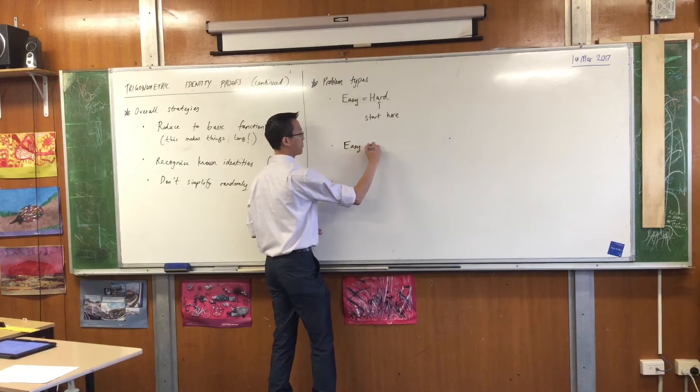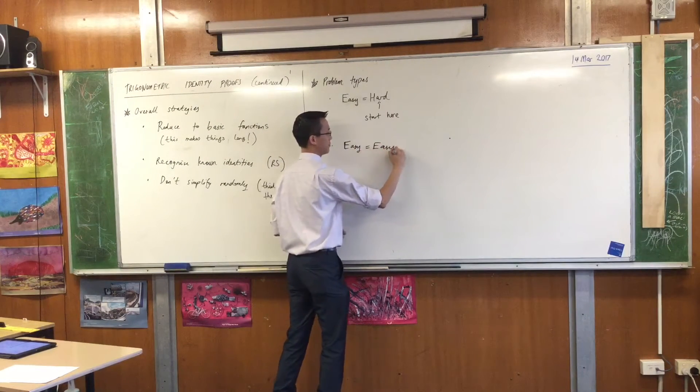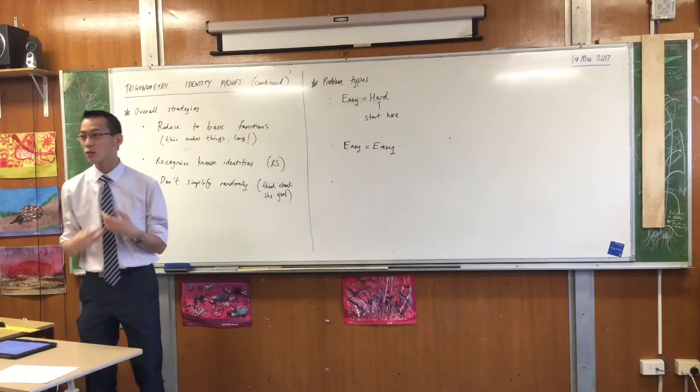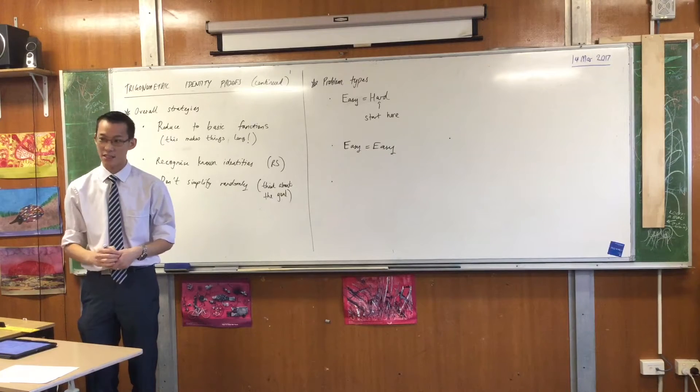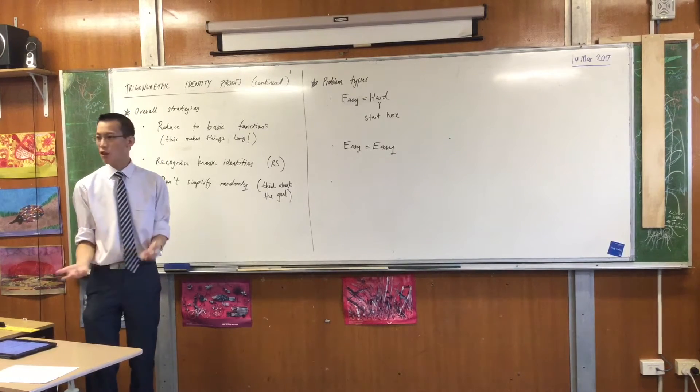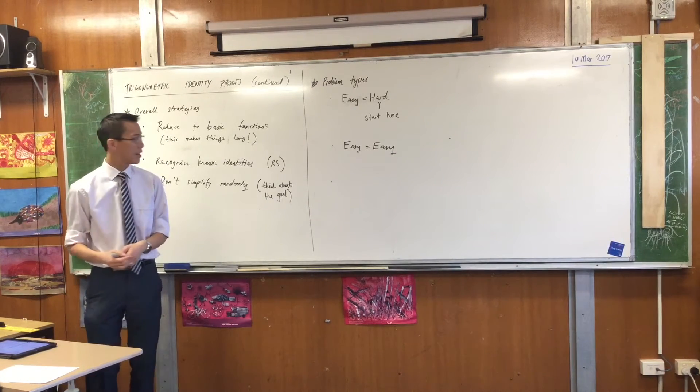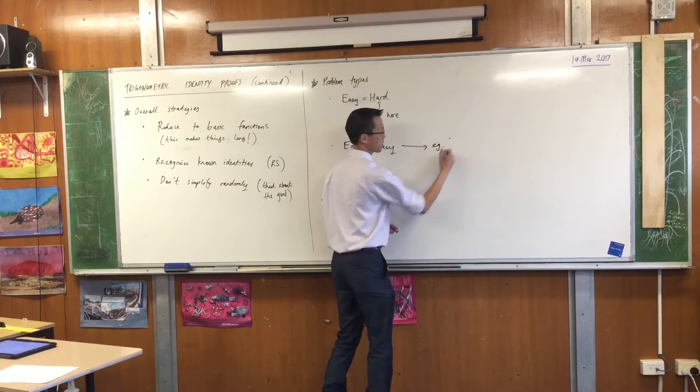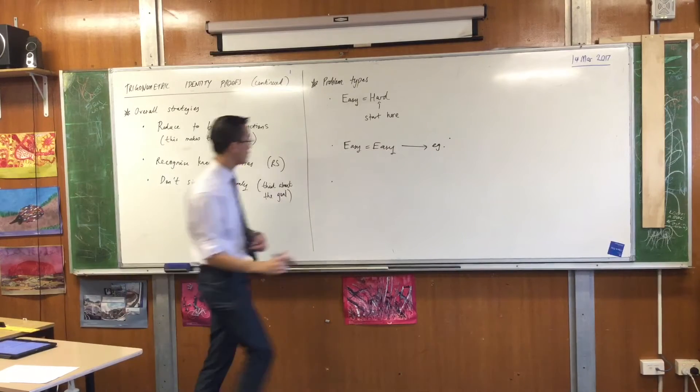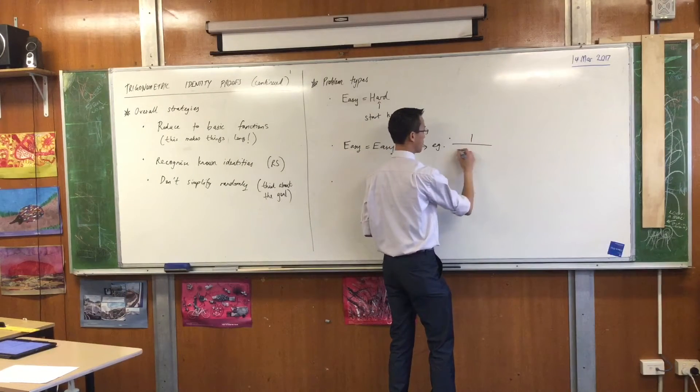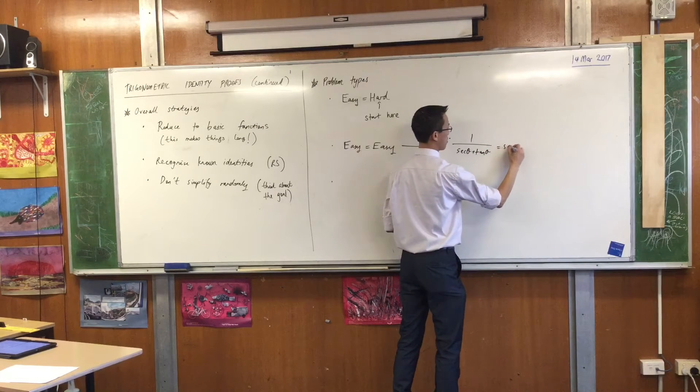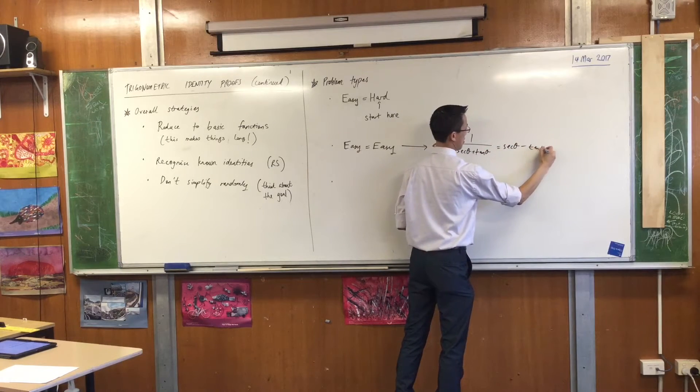The first one is this one. What you end up getting is something where both sides look like they've been really nicely simplified, and you're like, well, there's no obvious place to start. Right? Let me give you an example. I'll do this over here. Can you write down this one with me? Some of you may actually have seen it already. It looks like this.